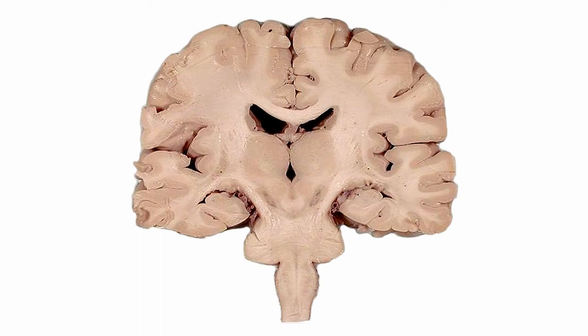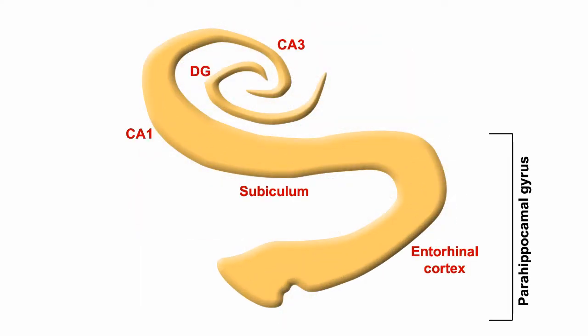The internal structure of the hippocampus is very regular. In cross-section, we can see two interlocking sheets of neurons that make up the hippocampal subfields, named CA1 to CA3, and the dentate gyrus.